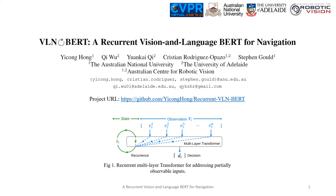The key idea is shown in Figure 1. We introduce recurrence into the multi-layer transformer to address partially observable inputs. At each time step, a new state representation will be generated based on the new observations. Meanwhile, the past information in state will help inferring a new decision.